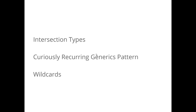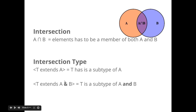Think about Venn diagrams — those intersecting circles with a region in the middle. That's what we're talking about with intersection types. In Java, T extends A means we want a type parameter T that is a subtype of A — either extends it if it's a class, or implements it if it's an interface. When you want T to be a subtype of both A and B, you use the ampersand symbol: T extends A & B. That's an intersection type.